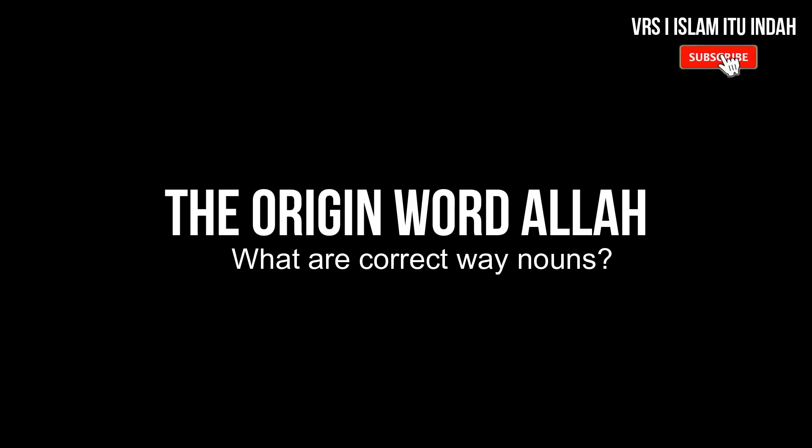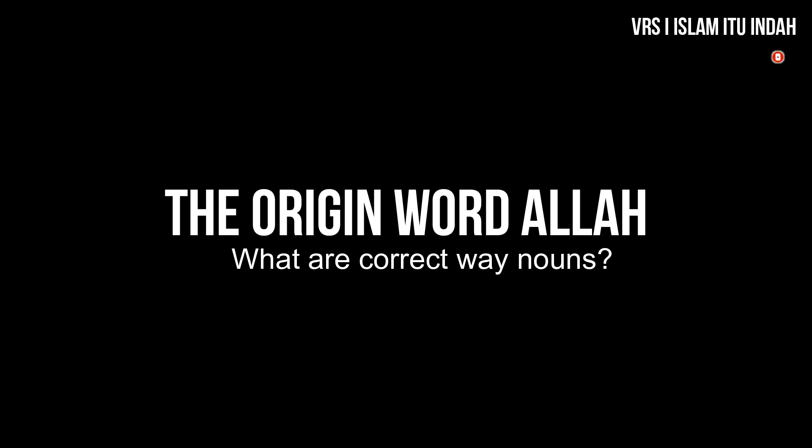In Arabic, there are two types of nouns: derived noun, الاسم المشتق, and primitive noun, which is الاسم الجامد.